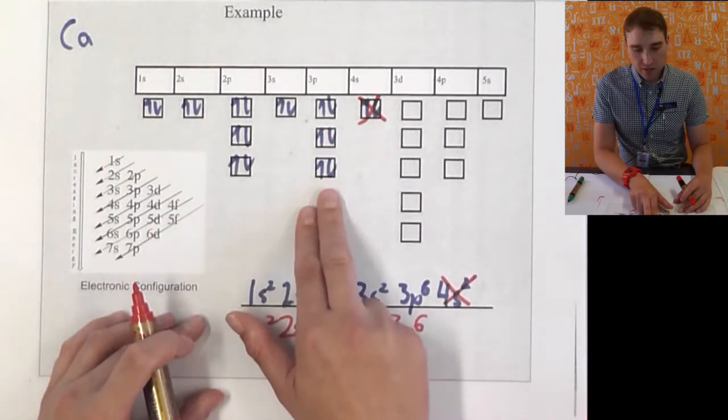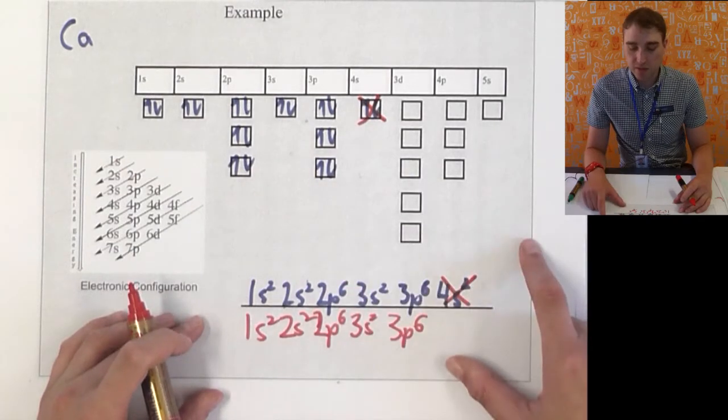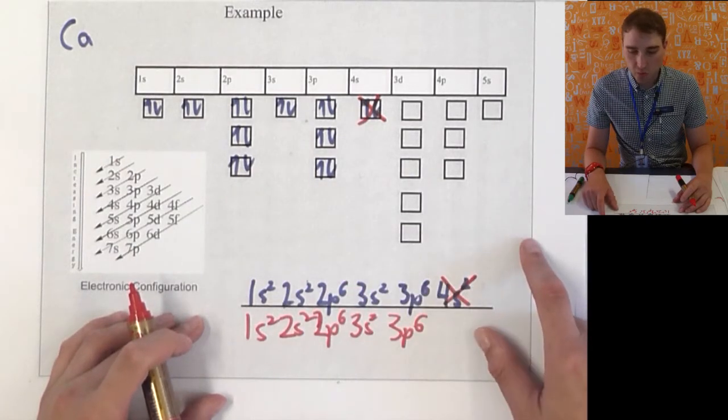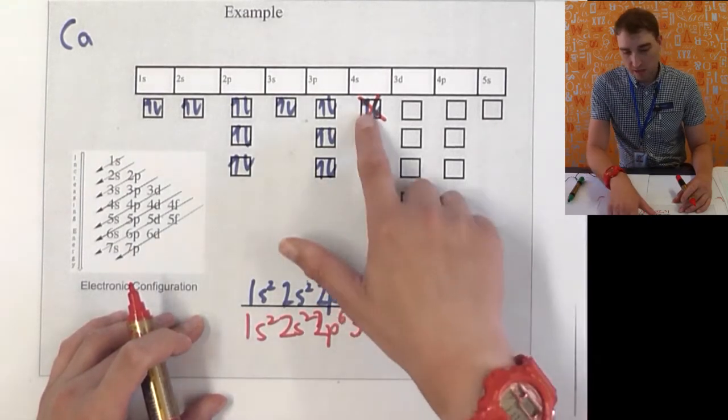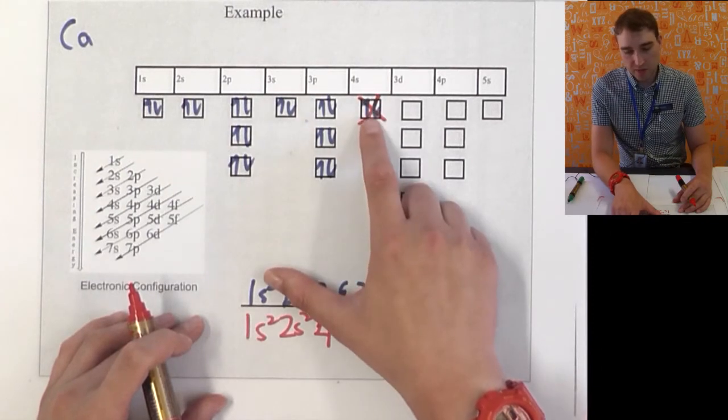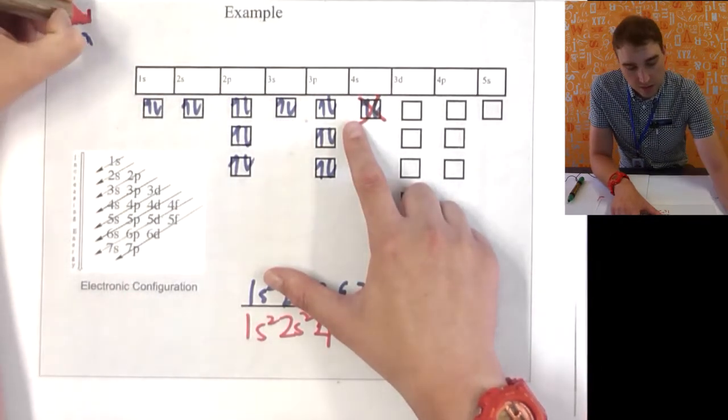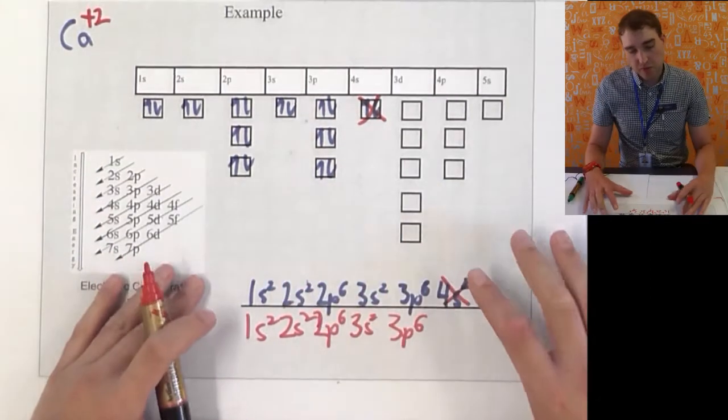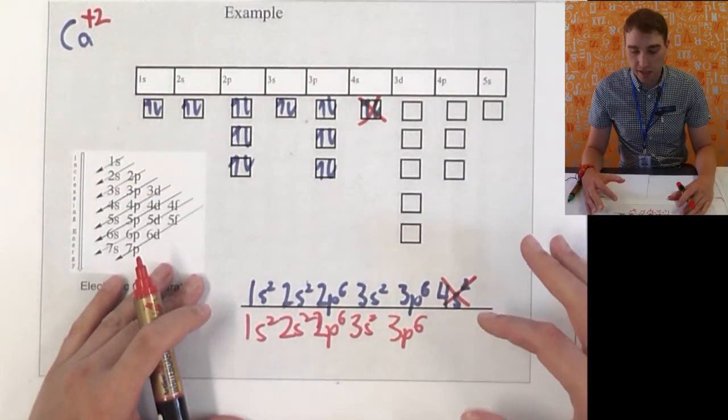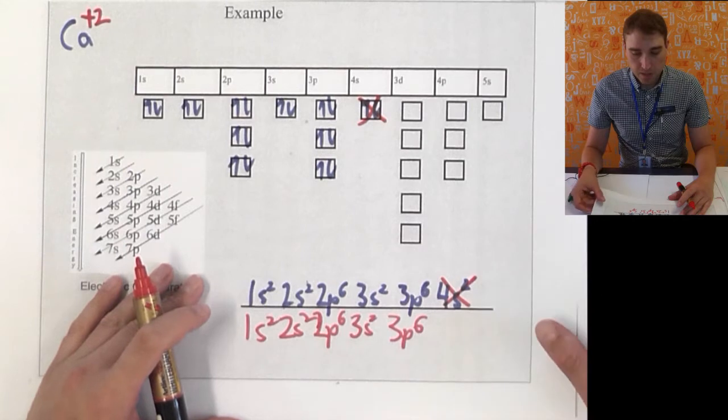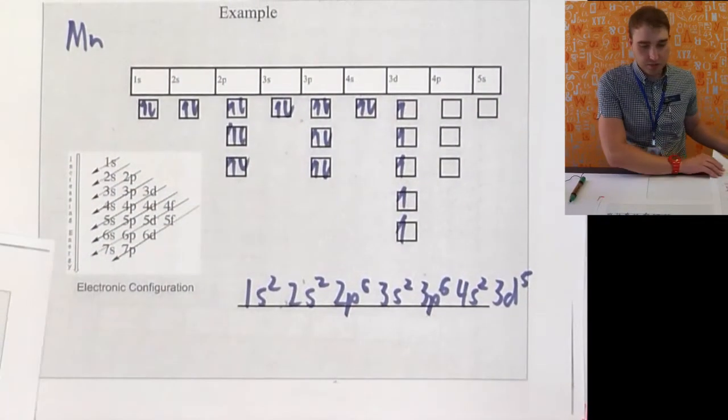That gives us a full 3p shell underneath, and the 4s subshell is lost. So, we're losing those 4s electrons. Because we've lost two electrons, that means we have two more protons in the nucleus, so that gives it a charge of plus 2. It's the calcium plus 2 ion or the calcium ion.